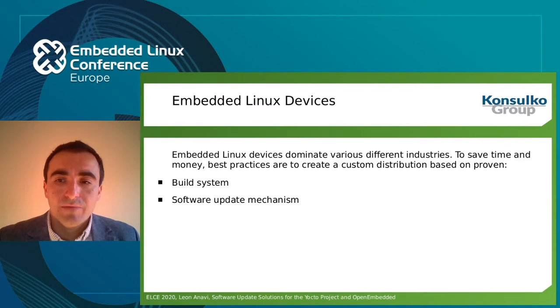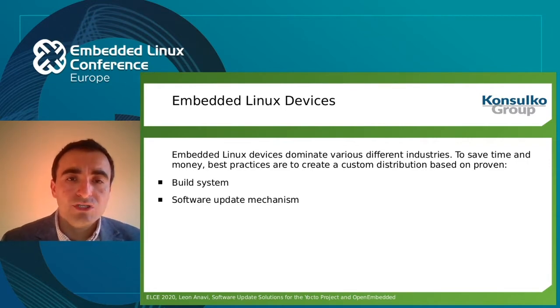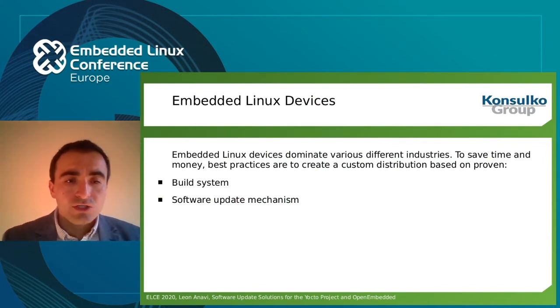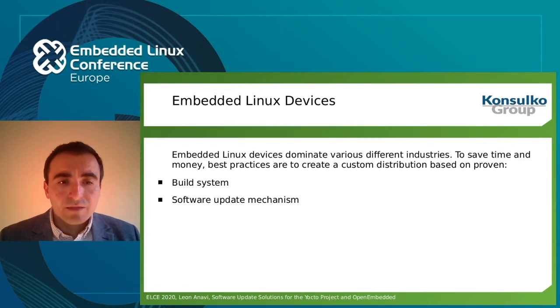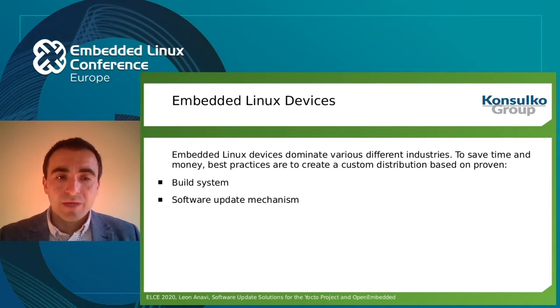Embedded Linux devices dominate various industries. At Consulco Group we have customers from the automotive, medical, telecommunications industries and various IoT companies. All of them need a build system to build a custom Linux distribution for their own needs and a software update mechanism. Among the best practices of the industry is to use popular stable open source products for the build system and software update mechanisms in order to save time and money.